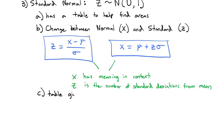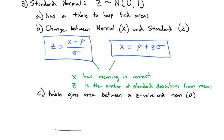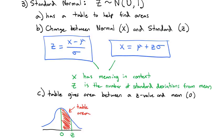The table gives the area between a z value and the mean, and the mean is zero. In other words, if I have this standard normal curve, the mean is always in the middle at zero. Off to the side we have a z value, and the table gives the area between that z value and the mean of zero.